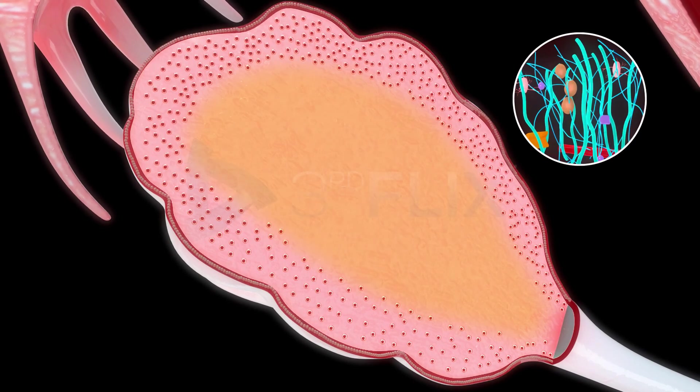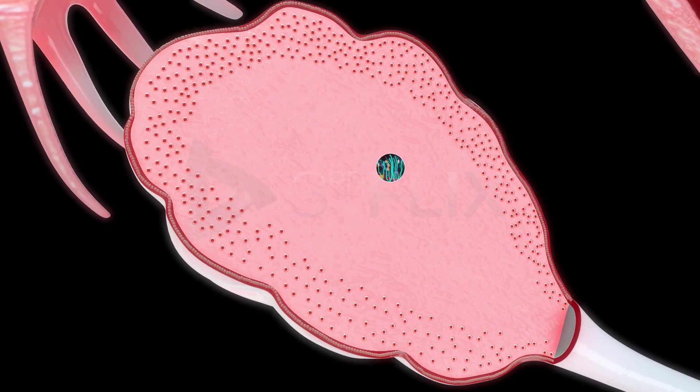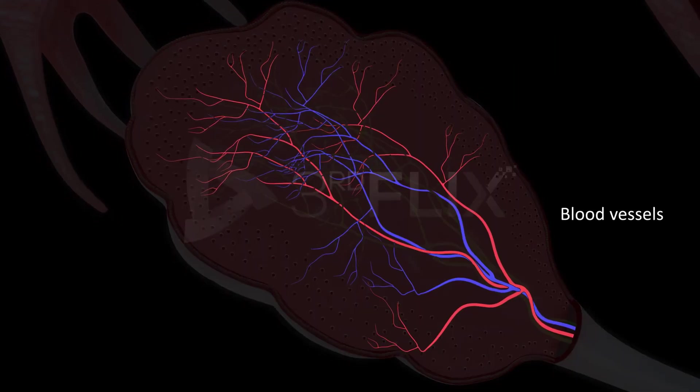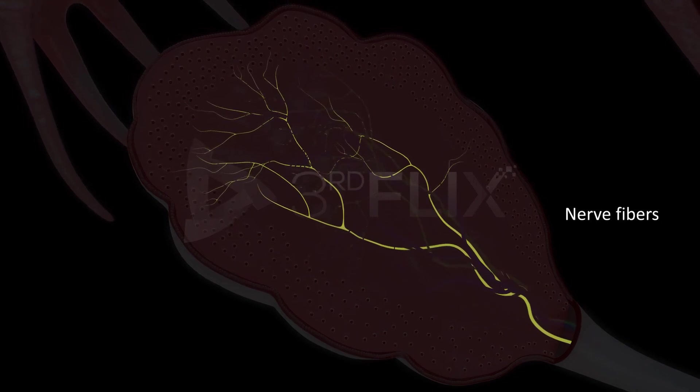The medulla is made up of loose connective tissue and contains abundant blood vessels, lymph vessels, and nerve fibers.